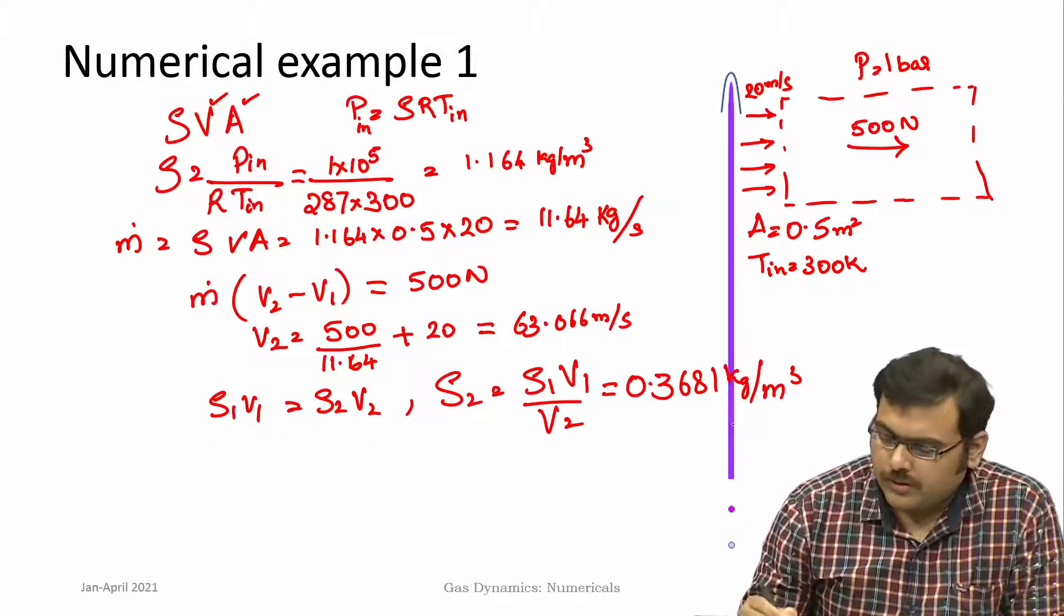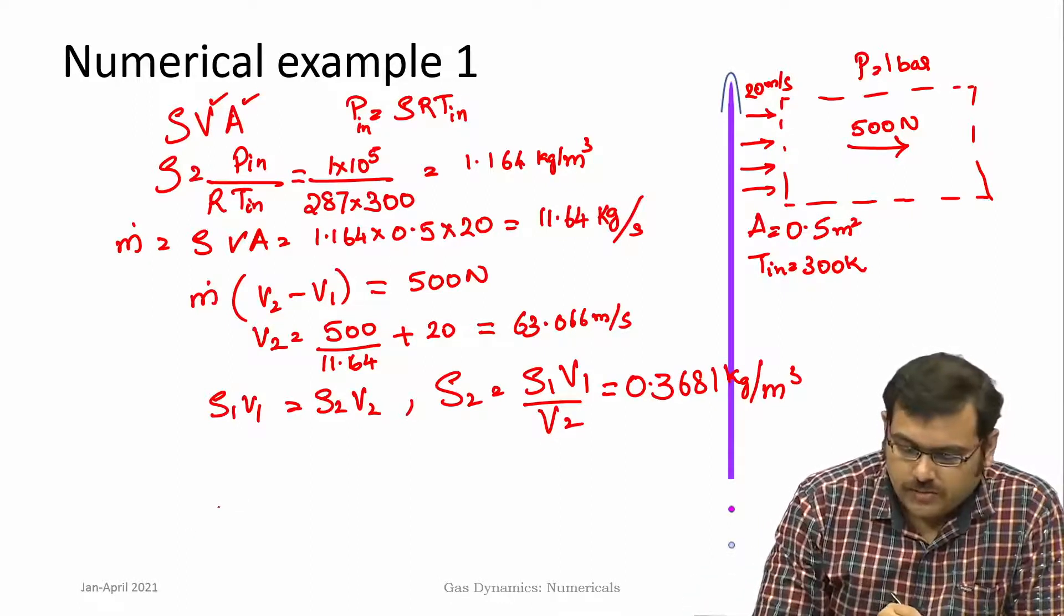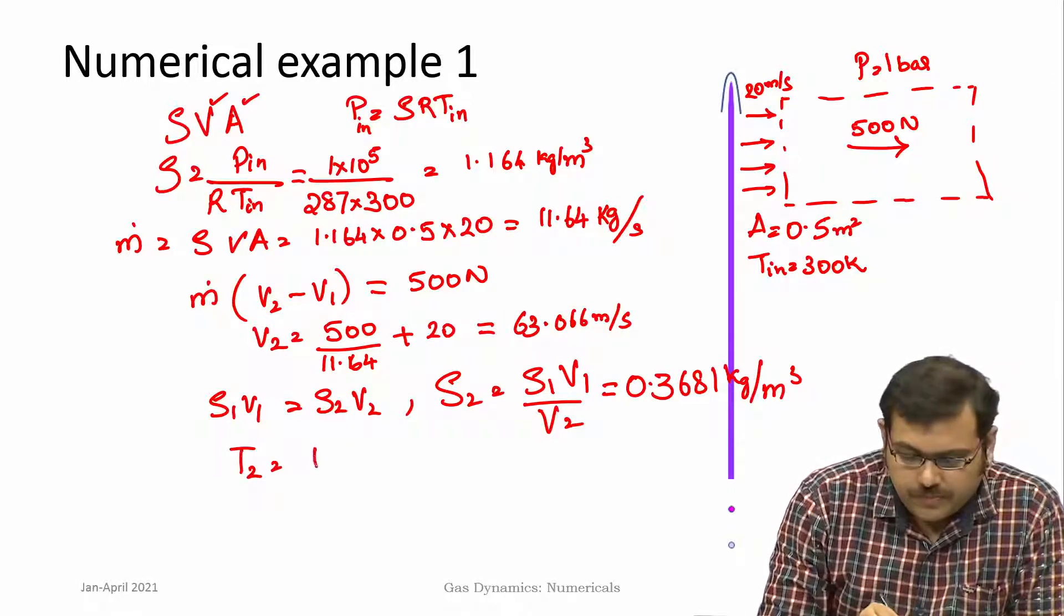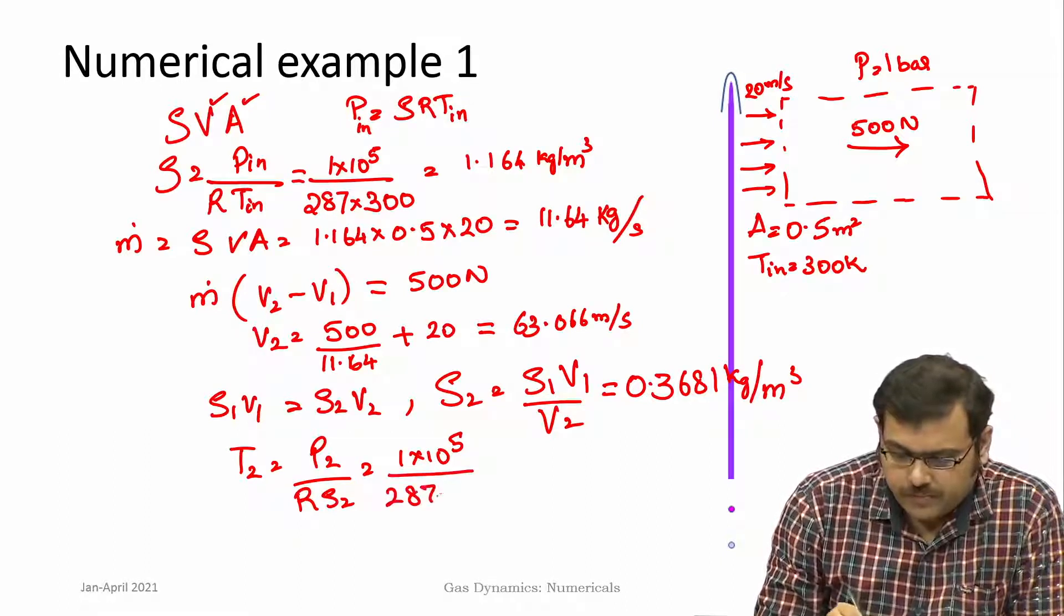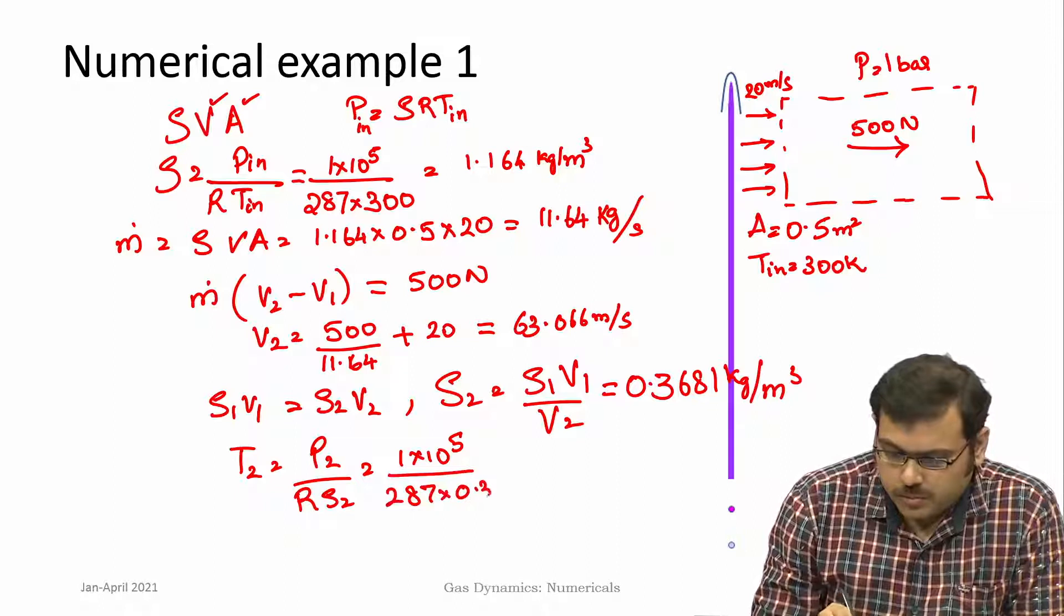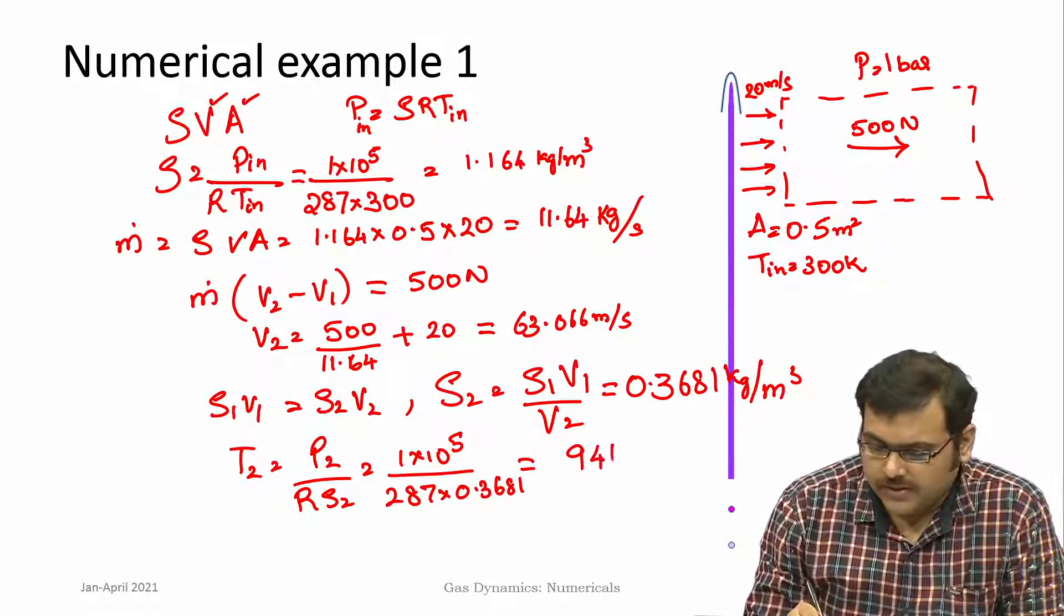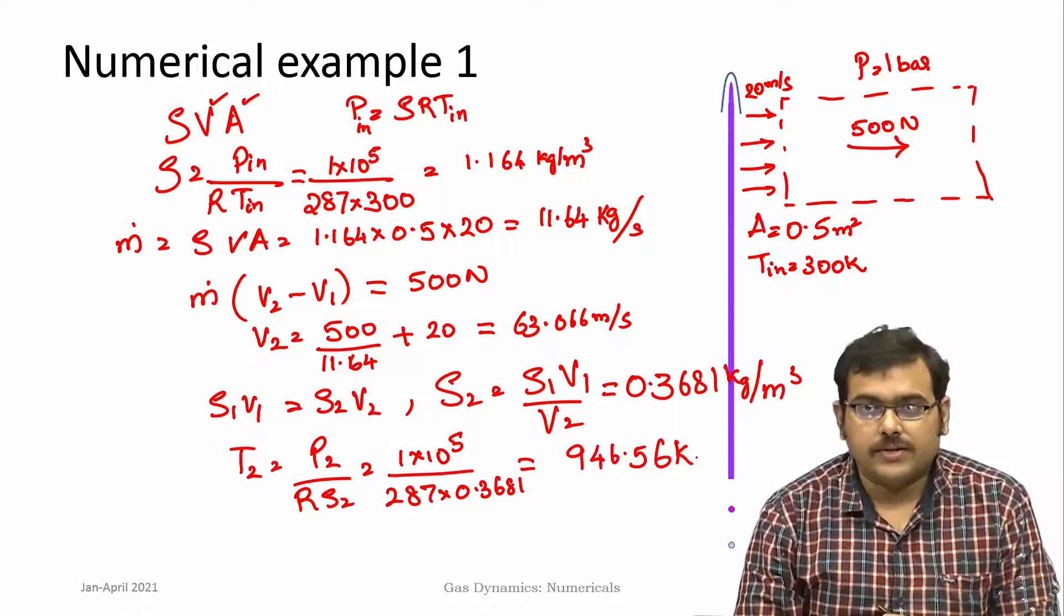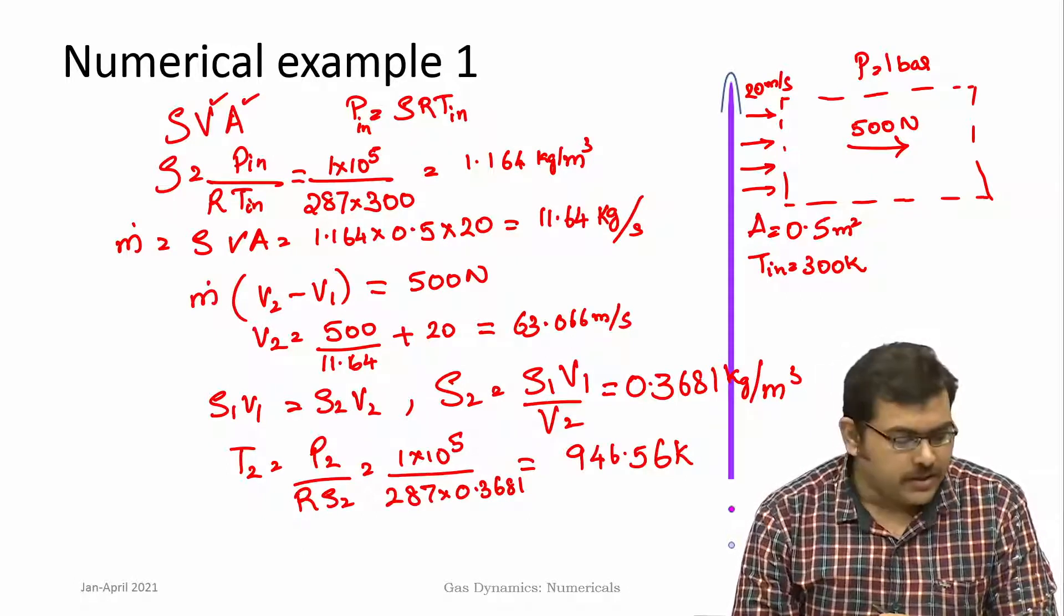Now we know the density, now the pressure is also known at the section which is 1 bar. Temperature we can find out: T_2 is P_2 divided by R rho_2. T_2 comes out to be 946.56 Kelvin. You see that temperature has increased significantly, clearly indicating that there has been an addition of heat.